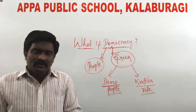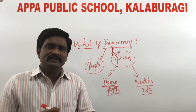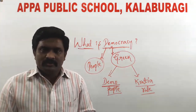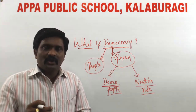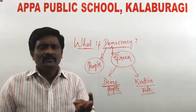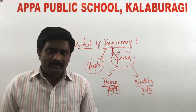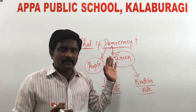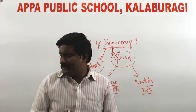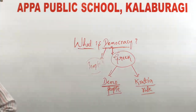Abraham Lincoln gave a simple definition of democracy: democracy is of the people, by the people, and for the people. This is democracy according to Abraham Lincoln. Now we will learn the simple definition of democracy.